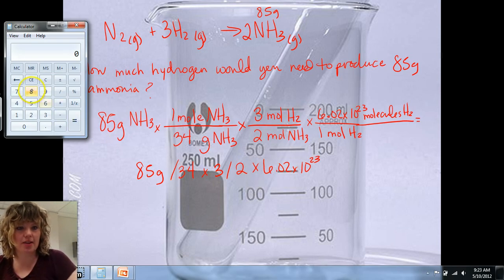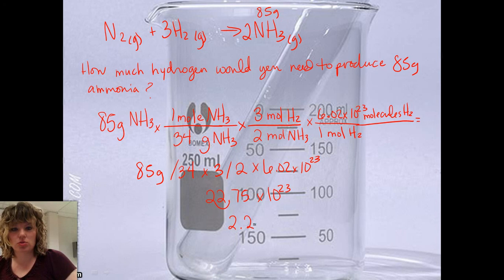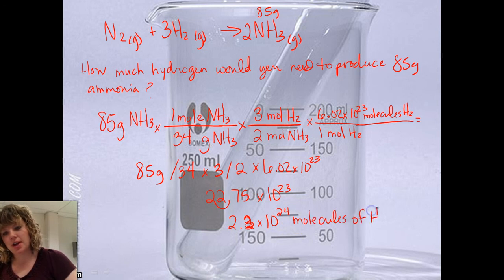Let's try to do this. So we do 85 divided by 34, 2.5 times 3, equals, divided by 2, equals, times 6.02, equals. So we get 22.75 times 10 to the 23rd. Of course, we want to move this over 1. So we do 2.3, because we only need two sig figs, 2.3 times 10. So if we make this number smaller, we have to make this one bigger, to the 24th. And this would be molecules of H2 gas.